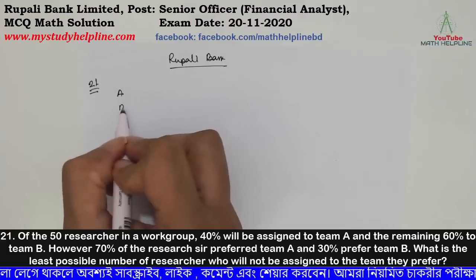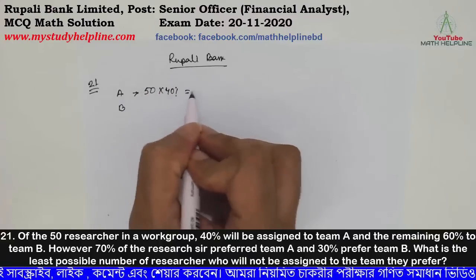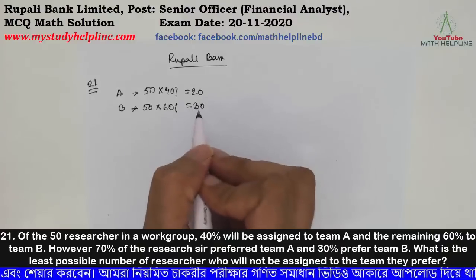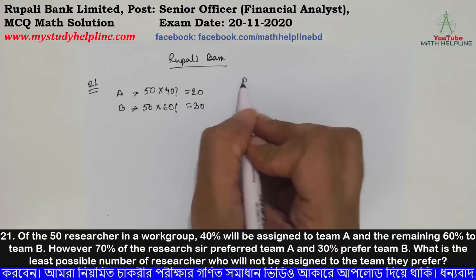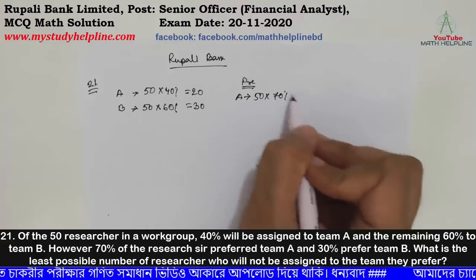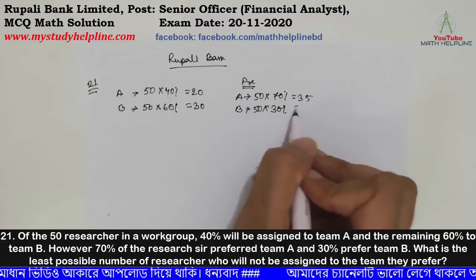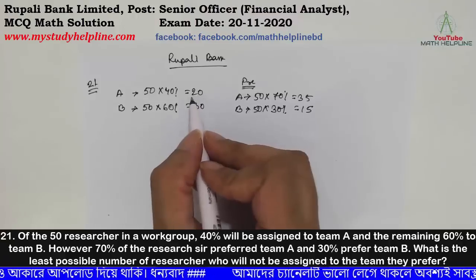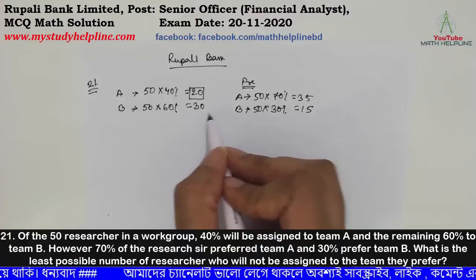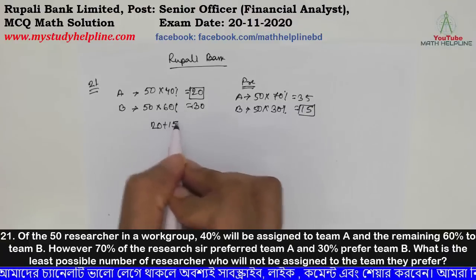So here, 40% go to team A and 60% go to team B. But 70% prefer team A and 30% prefer team B. Calculating: team A has 20 people with preference mismatch, team B has 15. So the least number not assigned to their preferred team is 20 plus 15, which equals 35.